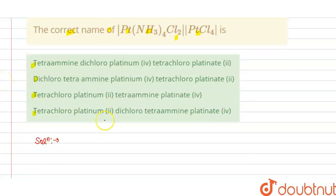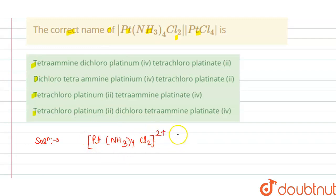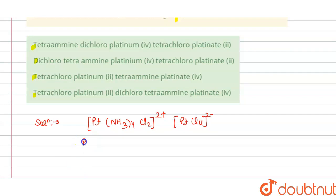So we have [Pt(NH3)4Cl2] — this is our cation with a 2+ charge — and [PtCl4], which is our anion. When we give the IUPAC name, preference is given to the cation. So firstly, we write the IUPAC name for the cation.